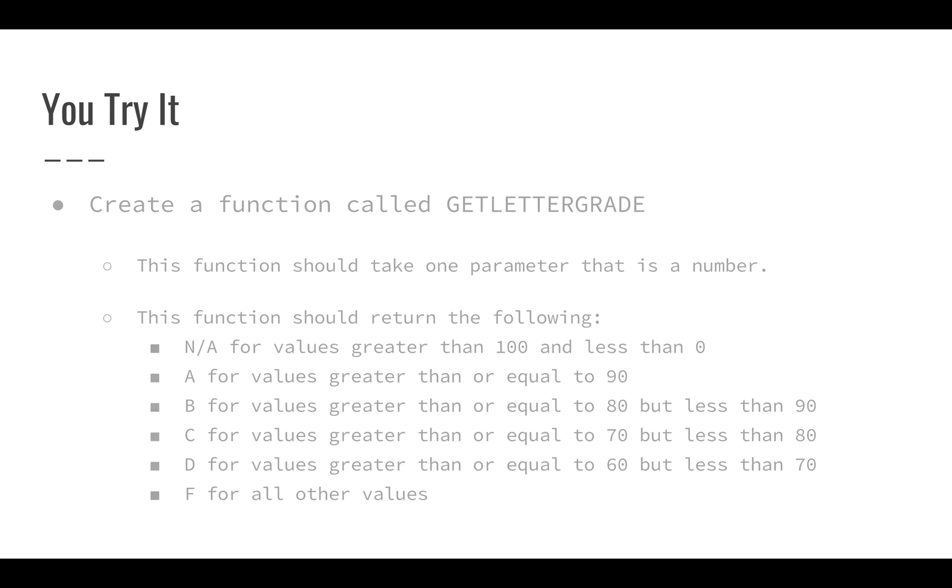The last function is related to the previous one. This function should take one parameter that is a number. It's going to be called GETLETTERGRADE, and we're going to kind of translate a number to a value here.